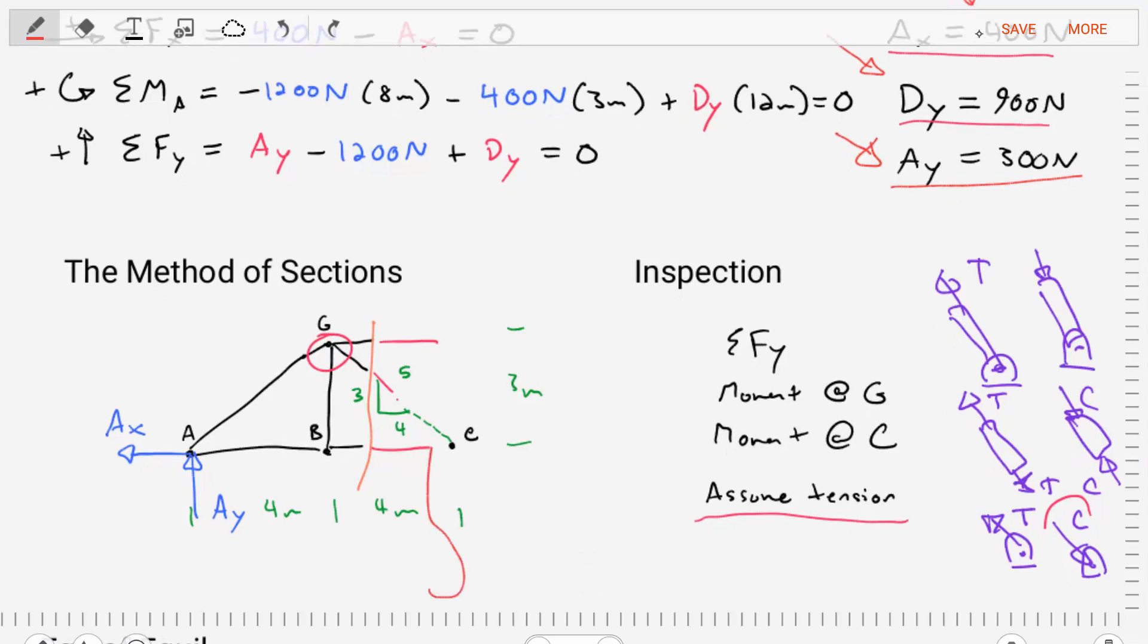And so in essence here, this is the squiggly line, and we have drawn the left-hand side of it. And we're going to try to establish equilibrium.